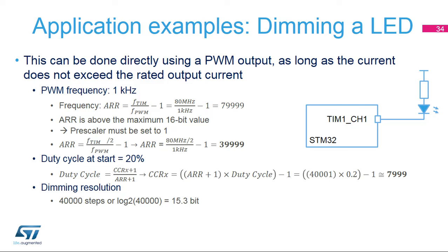A practical example of PWM usage is dimming a low-power LED. With no prescaler and a timer operating frequency of 80 MHz, programming a 1 kHz PWM yields an ARR value of 79999, which exceeds the 16-bit range for timer 1. The prescaler must be set to 1 to have the timer operating at 40 MHz, resulting in a valid ARR value of 39999. For a 20% duty cycle, the compare register value is 7999. With a timer running at 40 MHz, a 1 kHz PWM provides 40,000 dimming steps, corresponding to an equivalent resolution of 15.3 bits.